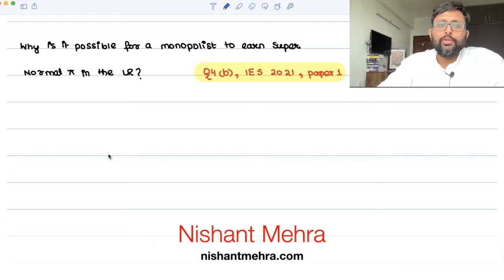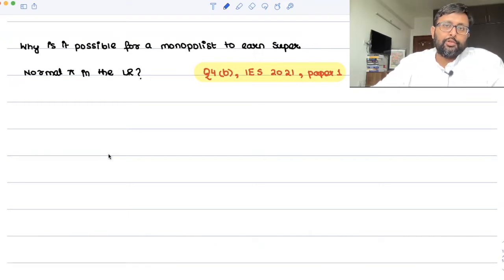Why is it possible for a monopolist to earn supernormal profits in the long run? So the basic idea is that the monopolist is able to earn supernormal profits in the long run because he can create barriers to entry. And when there are barriers to entry, then the problem is that no other firm is able to come into the market which can probably produce or sell at a lower price.